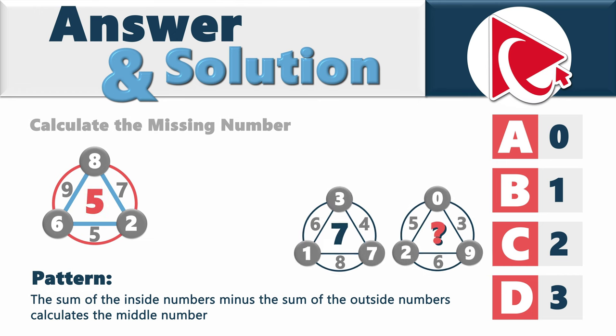Let's look at the example. In the first shape, the inside numbers are 5, 7, and 9. The sum of 5, 7, and 9 minus the sum of 2, 6, and 8 equals 5.